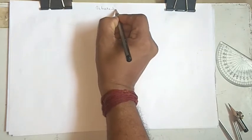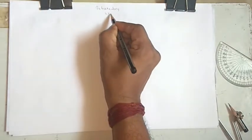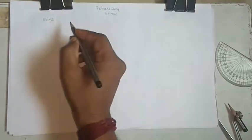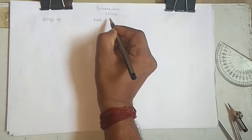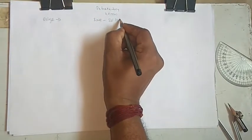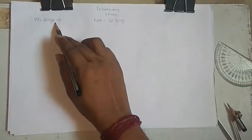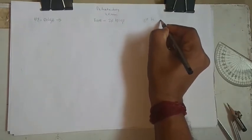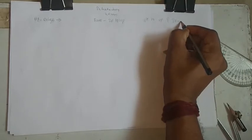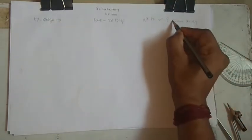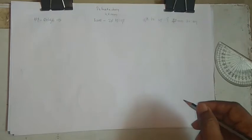A tetrahedron of side 40 mm — a tetrahedron normally has four equilateral triangles. It is resting on one of its edges, and the base containing that edge is inclined at 30 degrees to HP. The resting edge is parallel to VP and 40 mm away from it. These are the three key conditions you need to know.